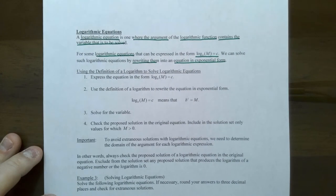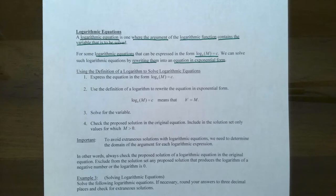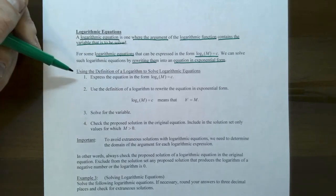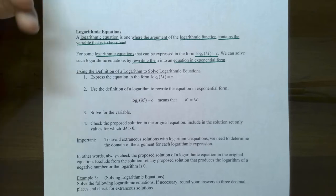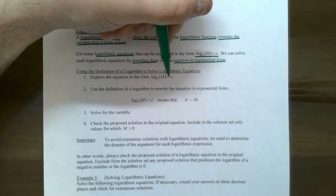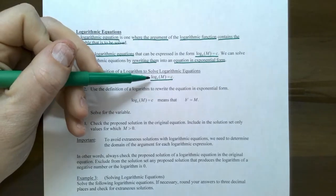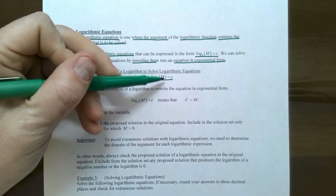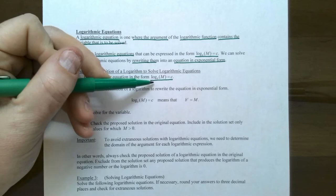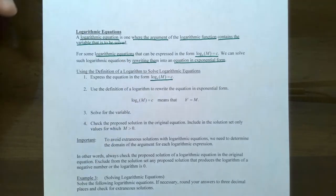We talked about changing from logarithmic form to exponential form a couple videos ago. Using the definition of a logarithm, we're going to solve logarithmic equations. The first step: make sure that the expression is in this form where log base b of some expression is on one side of the equation and the other side is equal to a constant or a real number.